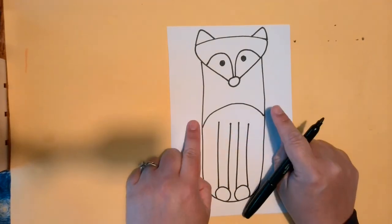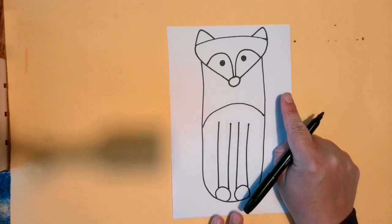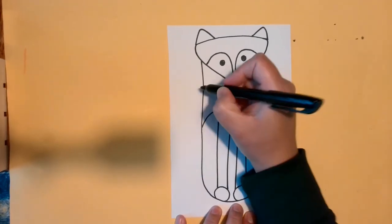Now, whichever side you have more room on is where I would put the big fluffy tail. On my big one, I put it on this side, but I think I have more room over here, so I'm going to put it on this side this time.